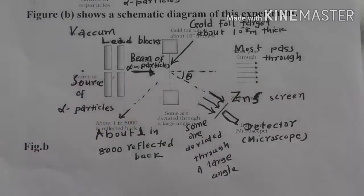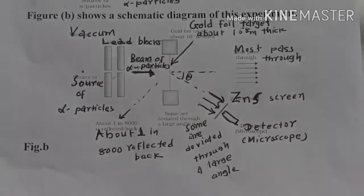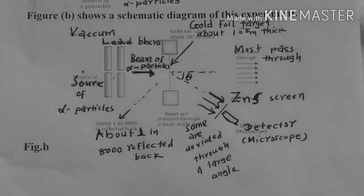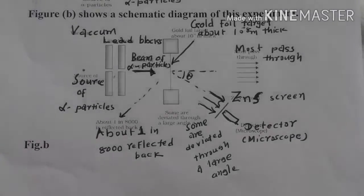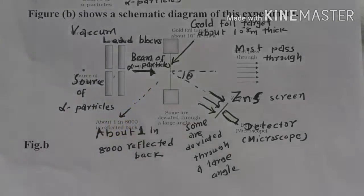This is what is the conclusion of this experiment. You can see the ratio: out of 8,000 alpha particles, one alpha particle is scattered at a large angle.